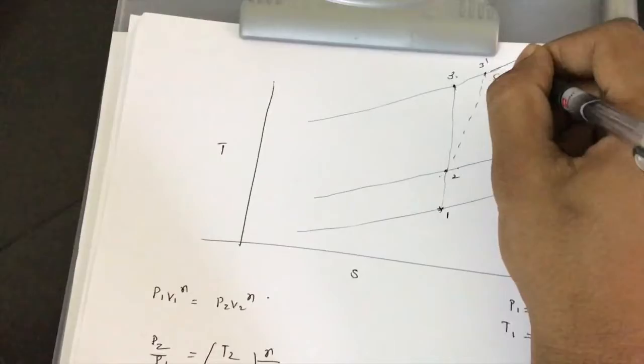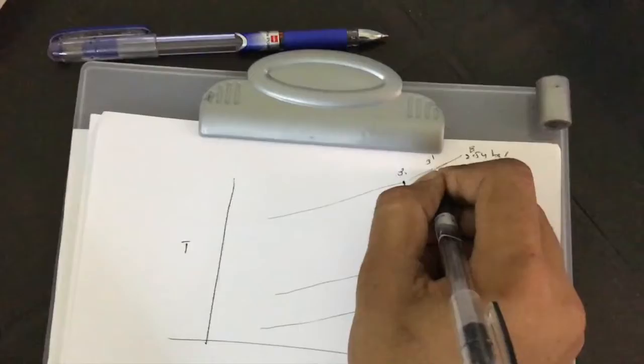Therefore T3-dash = 301.4 + 202.4 = 503.8 Kelvin.